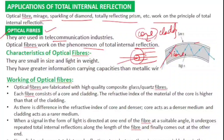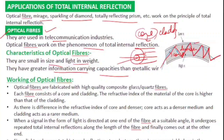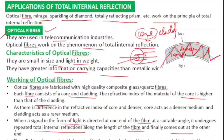When a light ray enters inside the optical fiber, it traverses the denser medium (core). When traveling from denser (core) to rare (cladding), if the angle of incidence is greater than the critical angle, total internal reflection takes place. The outer surface is called jacket. Advantages of optical fiber: small in size, light in weight, greater information-carrying capacity than metallic wire. There is no appreciable loss in the intensity of the light signal.